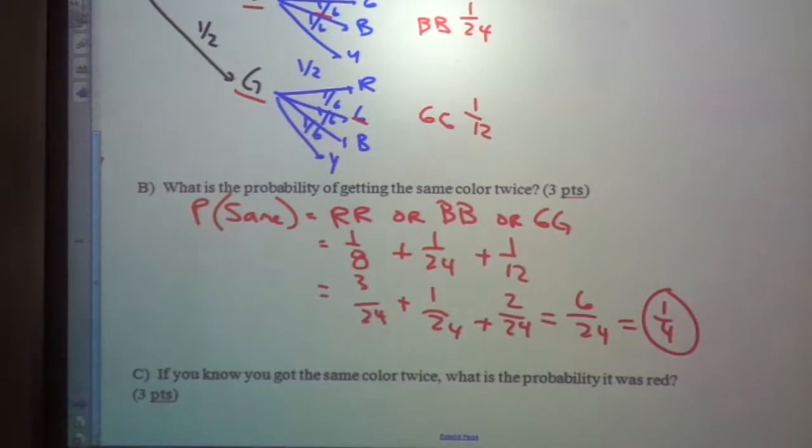So the probability of getting the same thing, somehow, is one out of every four spins. We're going to get the same color.